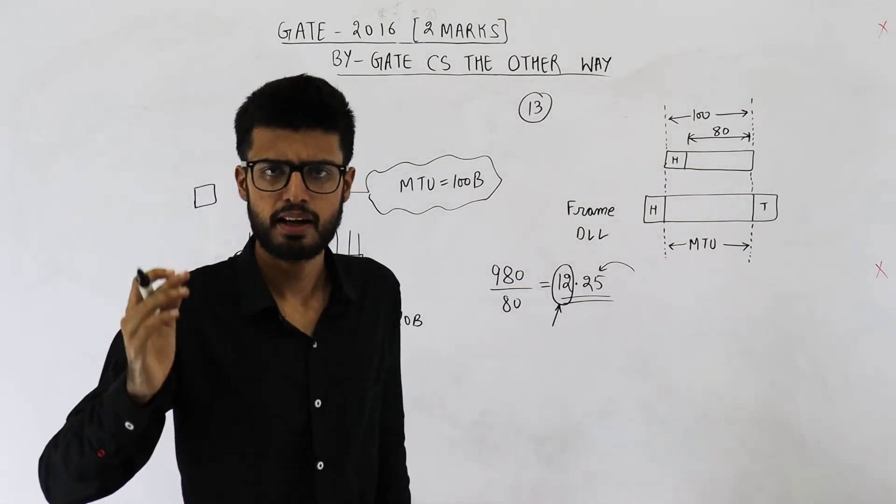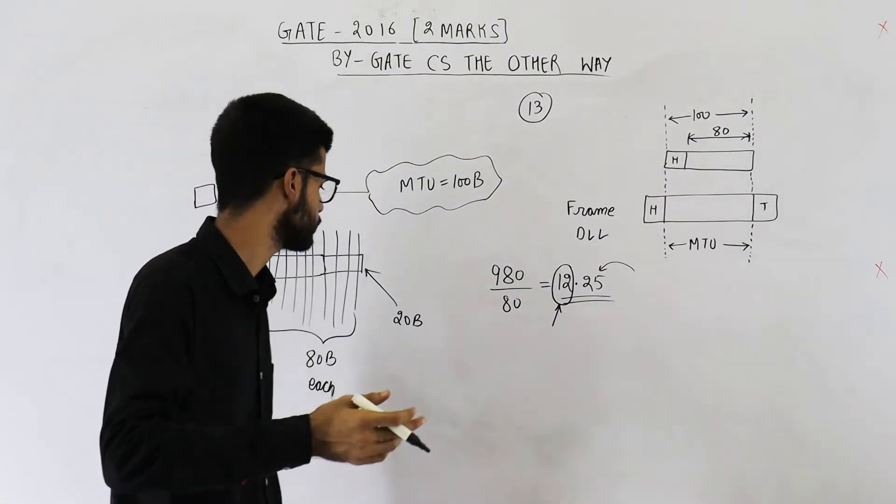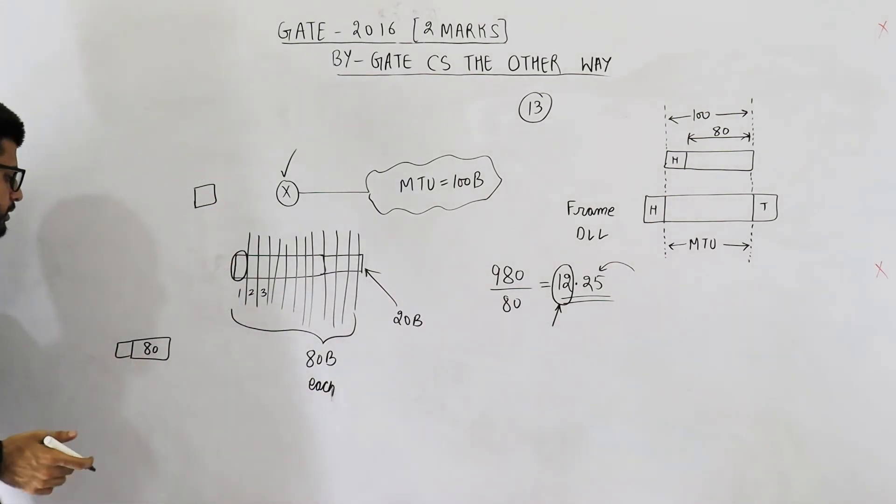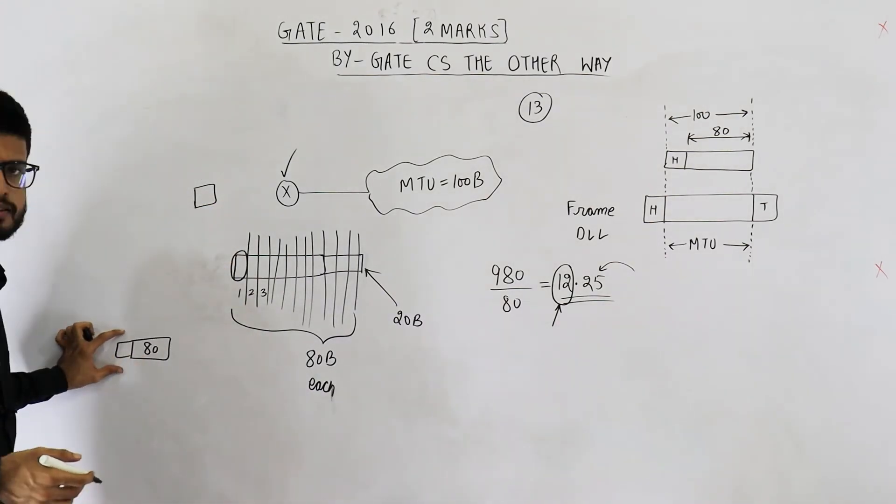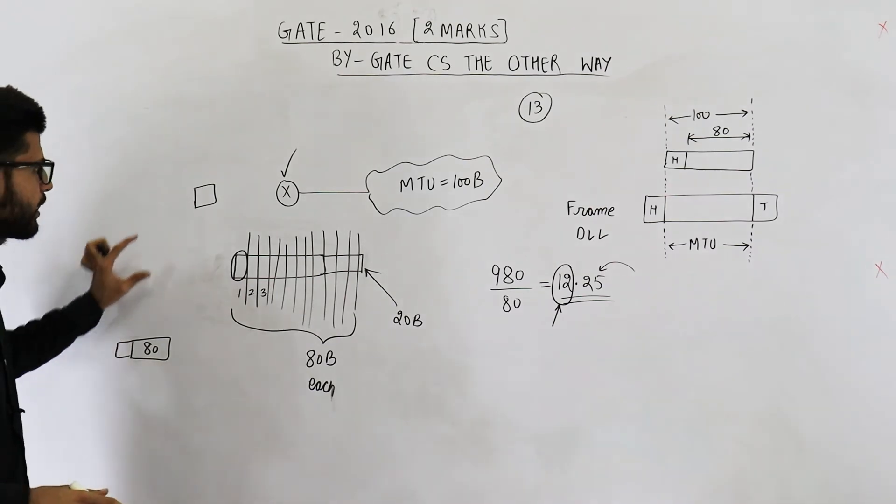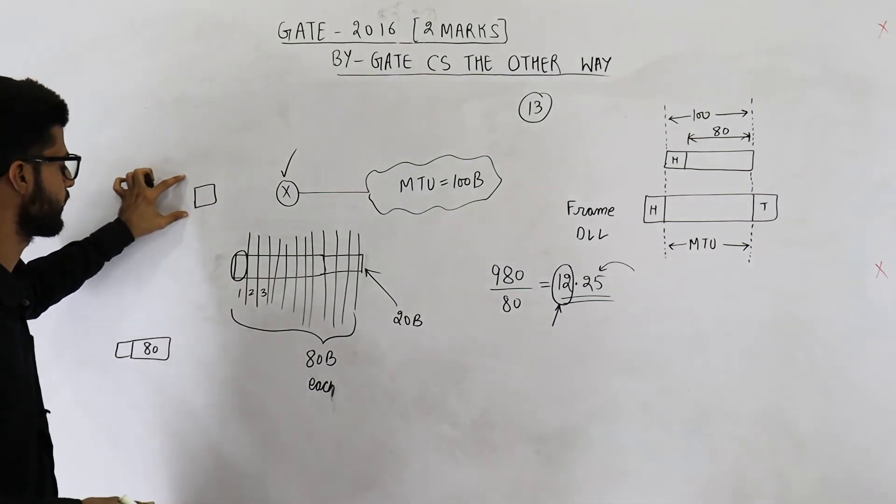Most of the things in this header will be copied as it is, except for a few fields like fragmentation offset and the more fragments bit and so on. Only very few fields will be changed. Now source address, destination address, they will be same and they will be seen from the original header.